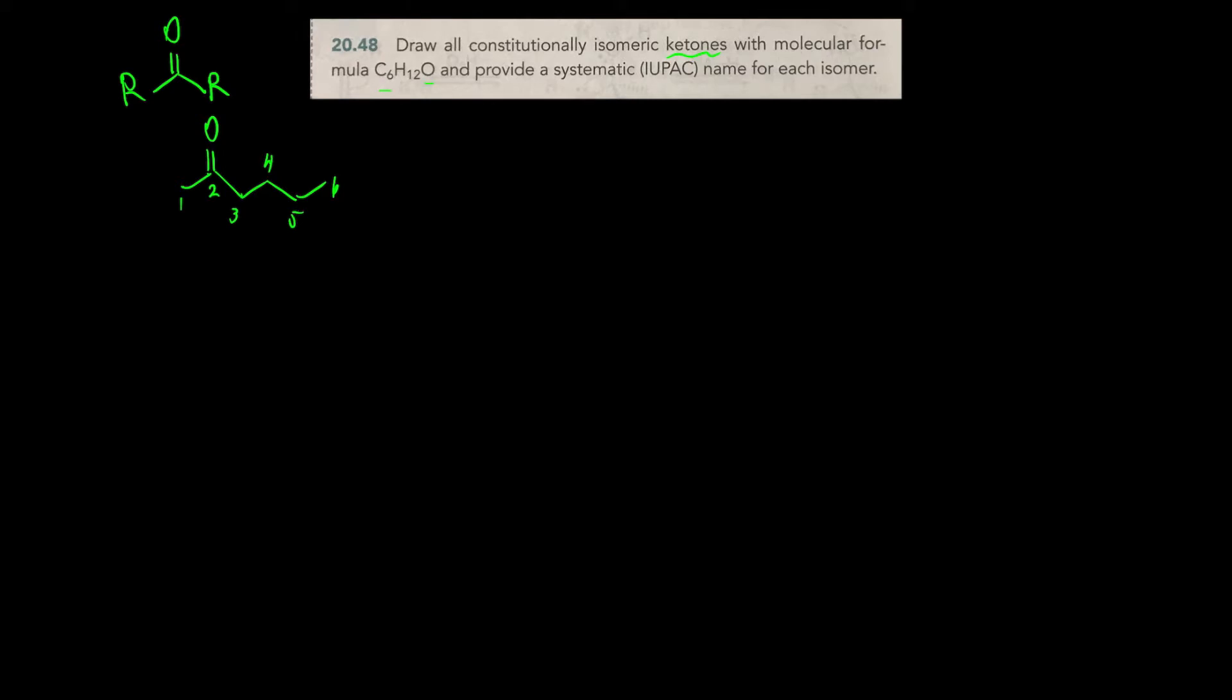What that means is that the ketone is going to be acyclic. No rings, no double bonds, no triple bonds, just simple carbons. And the only double bond is going to be the carbon oxygen pi bond.